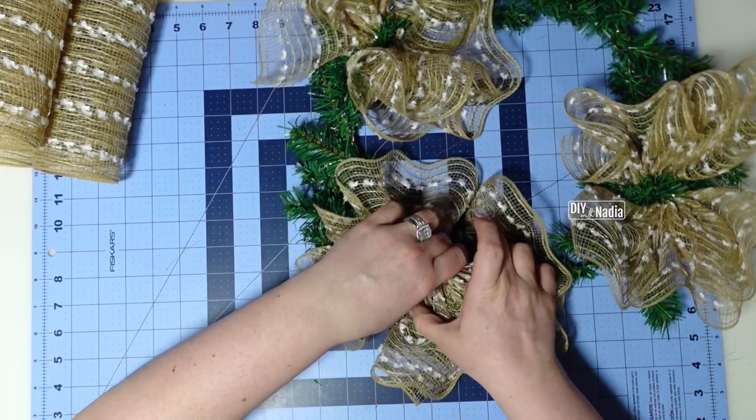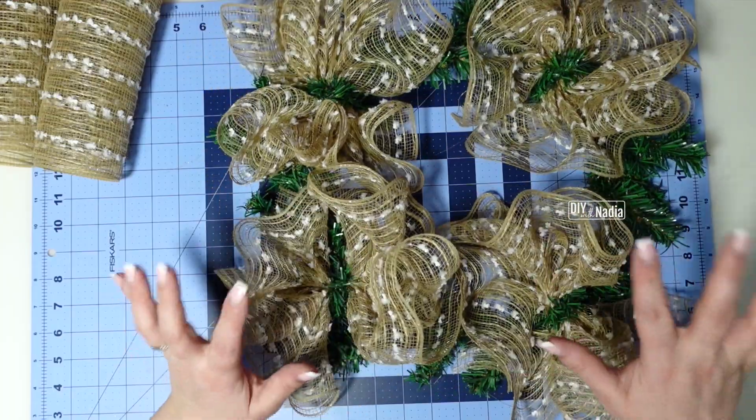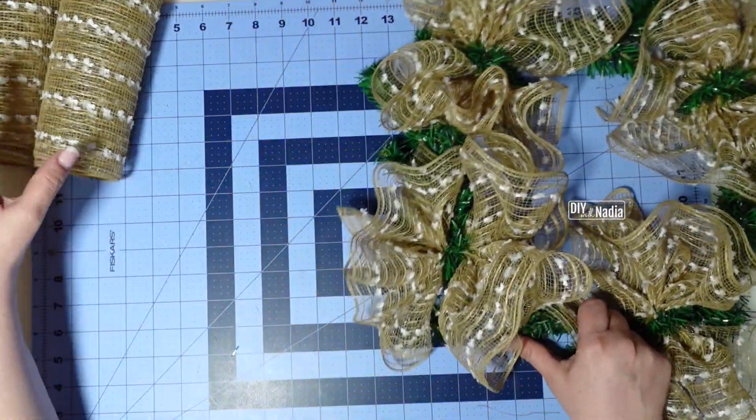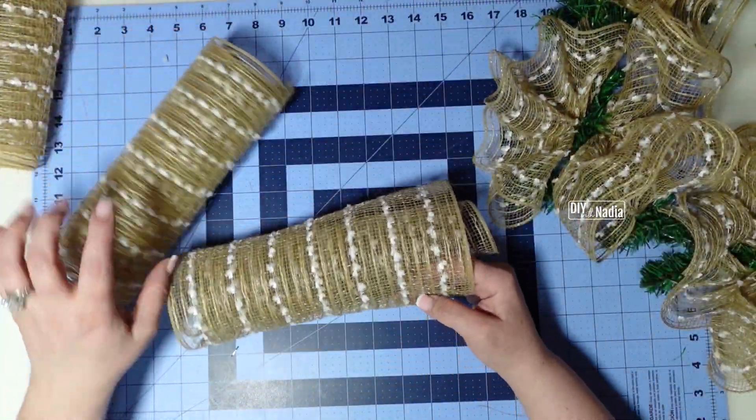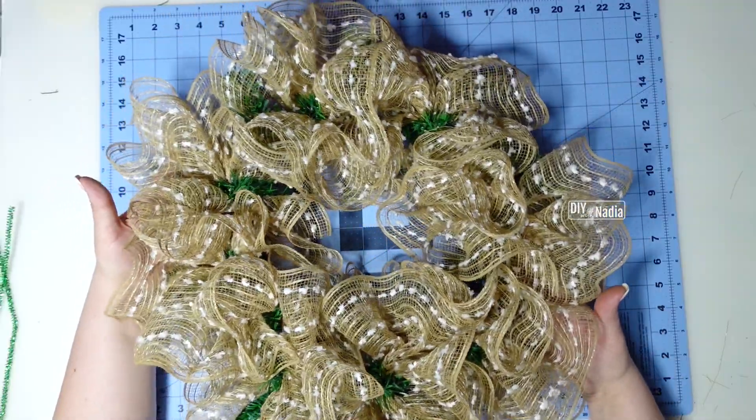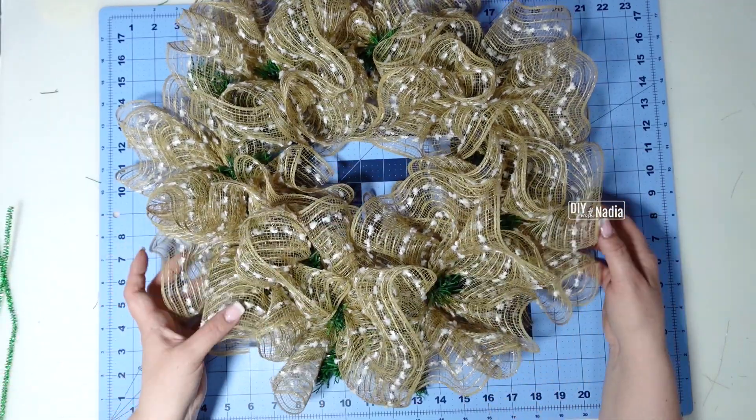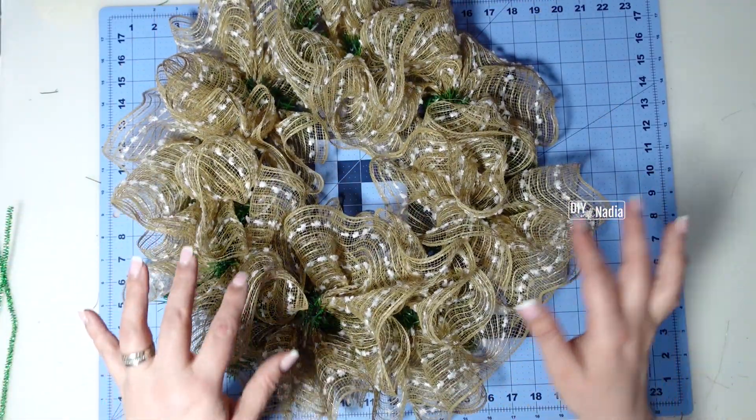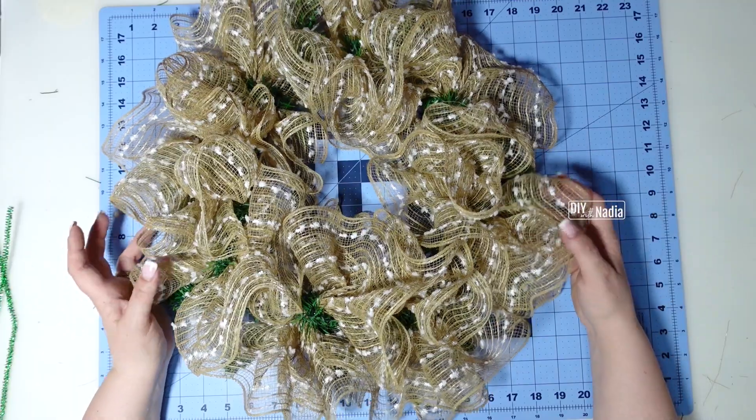Twist it and bend it back. Now that I have my initial four I'm just going to do the same thing with the rest of these and just go in between each of the four. Look at this gorgeous wreath you can hardly see the greenery but if it's peeking out here and there not a big deal at all.